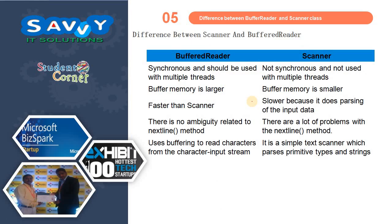Next we need to know the difference between BufferedReader and Scanner class. BufferedReader is synchronized and should be used with multiple threads, whereas Scanner is not synchronized and not used with multiple threads. BufferedReader has a larger buffer memory; Scanner has a smaller buffer. BufferedReader is faster than Scanner because Scanner does parsing of the input data. There is no ambiguity related to the nextLine() method in BufferedReader, whereas there are a lot of problems with the nextLine() method in Scanner. BufferedReader reads characters from a character input stream; Scanner is a simple text scanner which parses primitive types and strings.